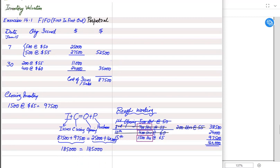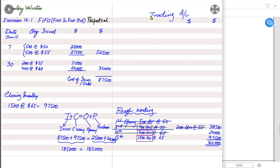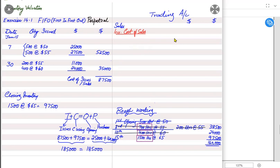Finally, for the third requirement of gross profit, we make a trading account — which is a partial income statement up to gross profit. Sales minus cost of sales gives gross profit. Cost of sales can be found as opening inventory plus purchases less closing inventory. We have already found cost of sales using the perpetual method, so we can directly deduct it from revenue.